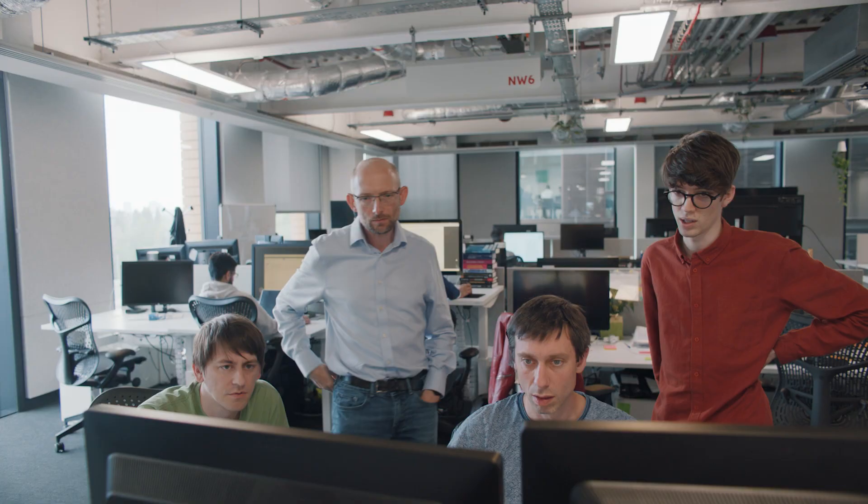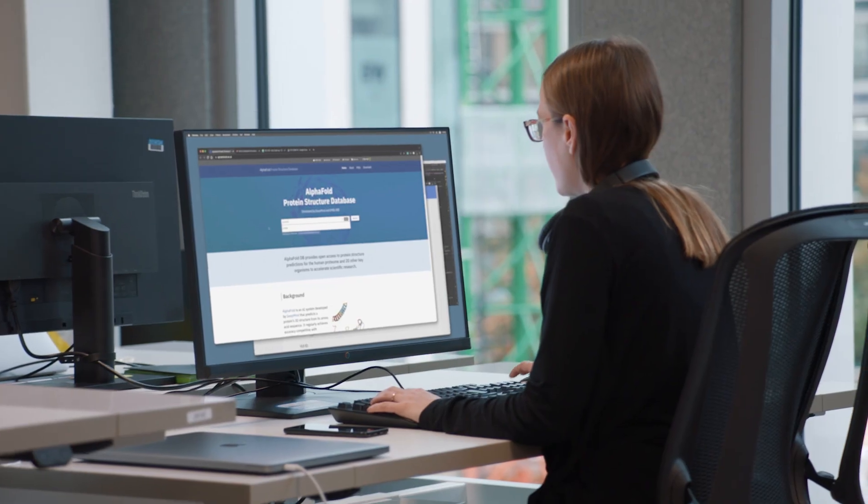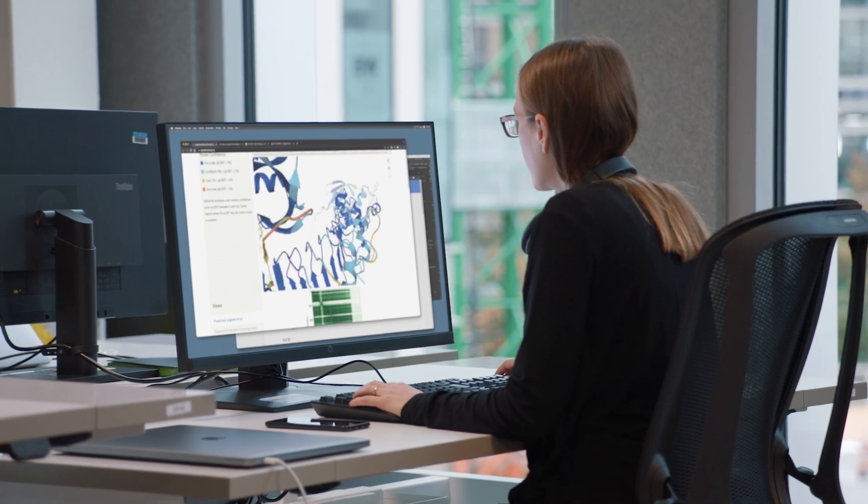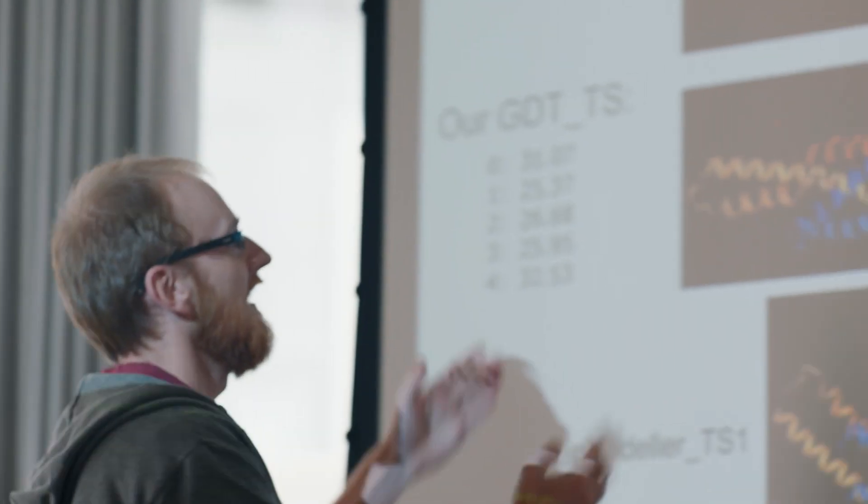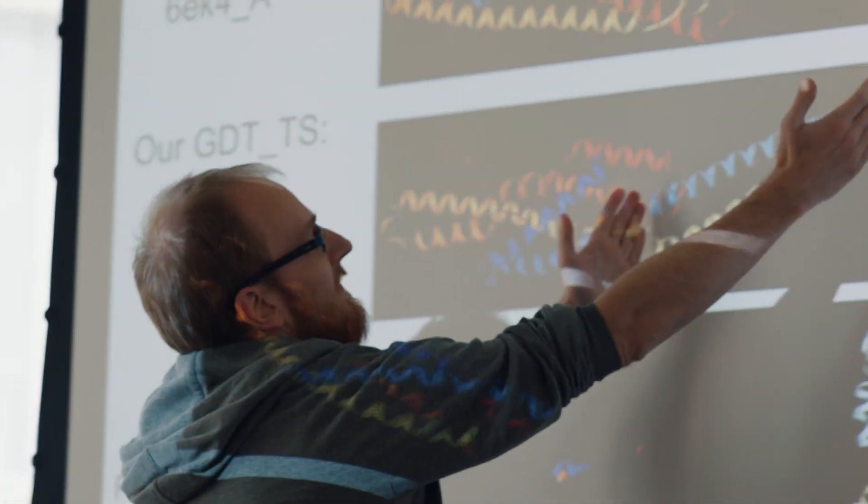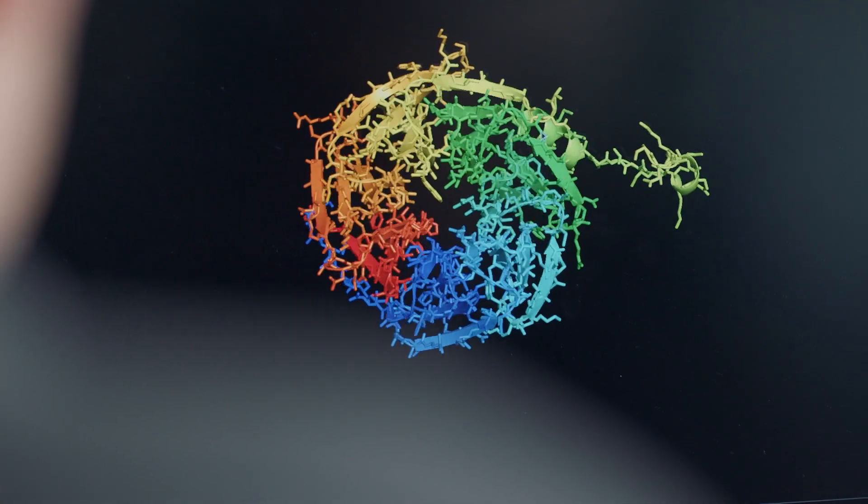AlphaFold is trained on publicly available data consisting of about 170,000 protein structures and is the first computational method that can regularly predict the 3D shape of a protein at scale with a high degree of accuracy.